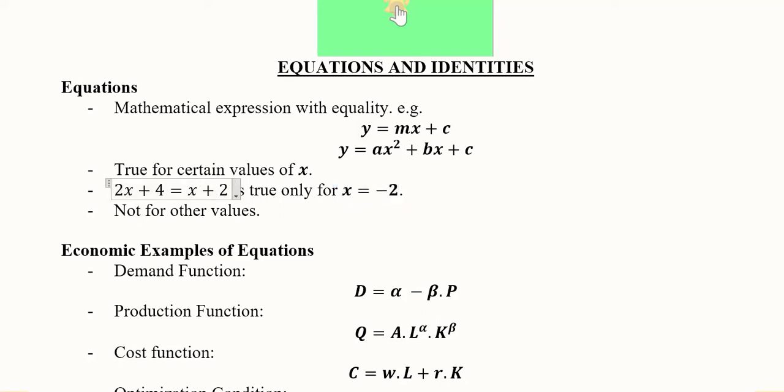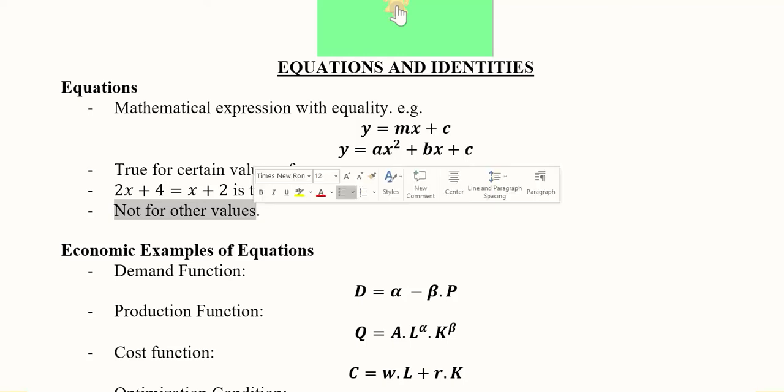If I put minus three here for example, the answer will not be equal on the two sides. So for such equalities where a certain value is enabling the equality, we call it an equation. So it does not happen for other values. It happens for only a few values.